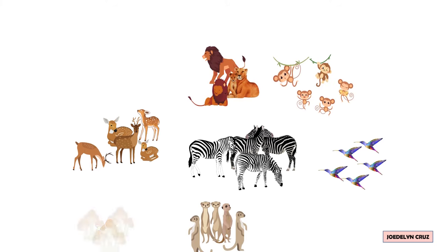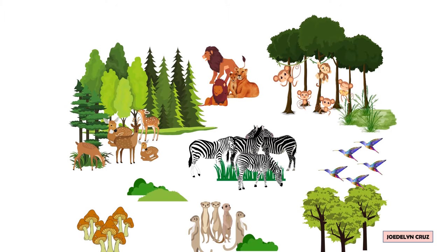When the population of zebras, bluebirds, deer, lions, monkeys, meerkats, mushrooms, trees, and grasses live and interact in the same place at the same time, the community is made.